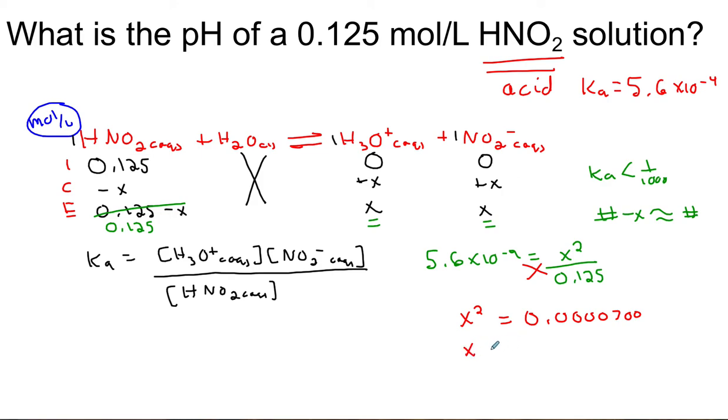Our X, which equals our concentration of hydronium, will be 0.00837 moles per liter. Now I am not done the question, so I wanted to carry extra significant figures and you would actually make sure you keep all the digits in your calculator.